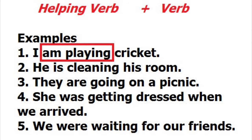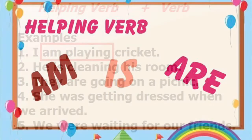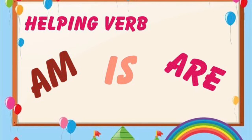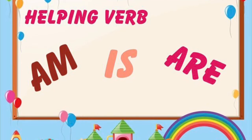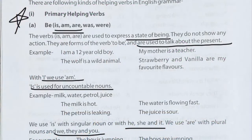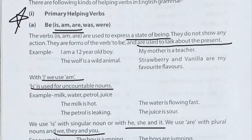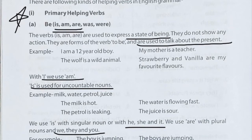Today we are going to discuss helping verbs — mainly 'am,' 'is,' and 'are.' First of all, the verbs 'is,' 'am,' and 'are' are used to express a state of being — how you are feeling, what your condition is. They do not show any action.